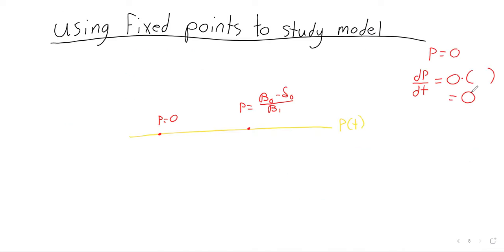So this differential equation tells you there are two values of the population where if you ever reach those values, you just sit there forever. There would always be zero animals, or there would always be beta zero minus delta zero over beta one animals. And this number has a special name. It's called the carrying capacity of the animal population.